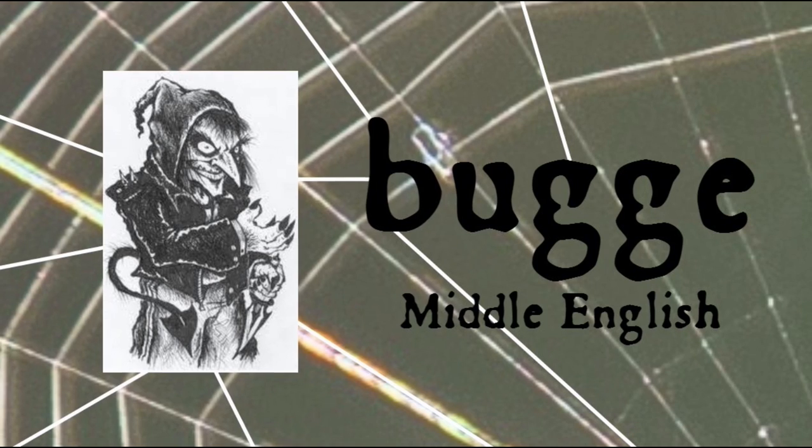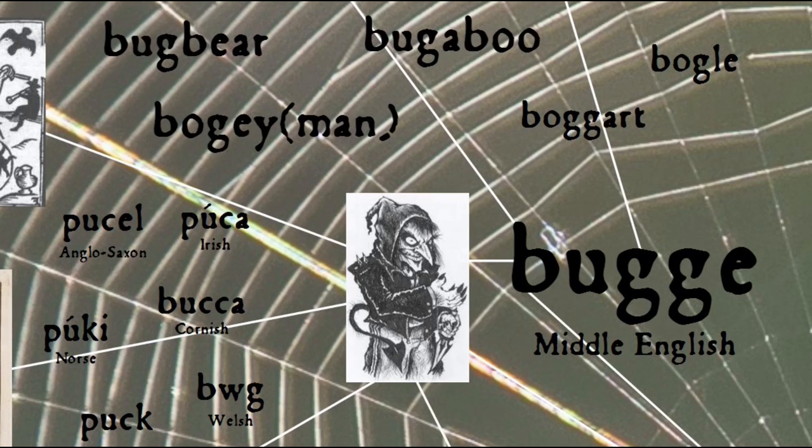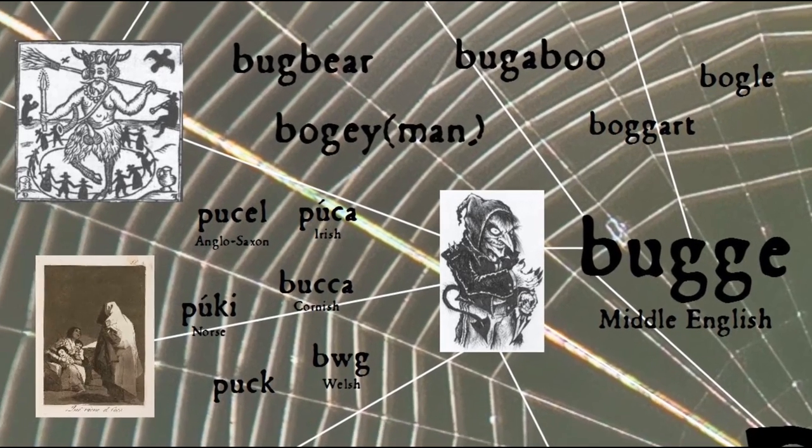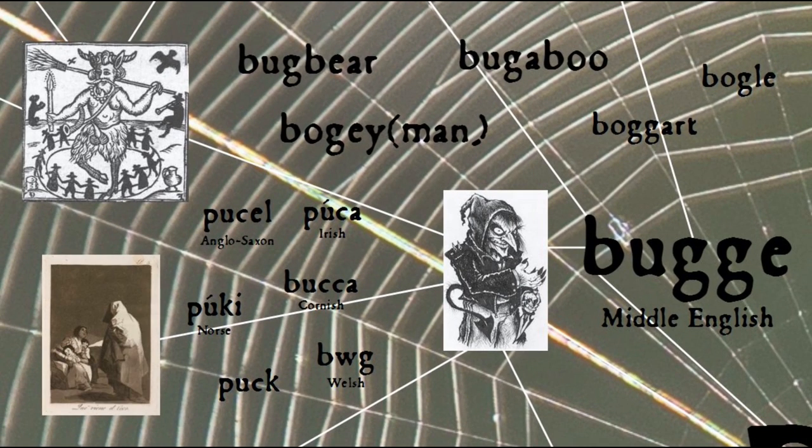This sense is still preserved in the related terms bugbear, bugaboo, bogey, and boogeyman, as well as a number of other similarly named creatures. All of these similar words refer to mischievous folkloric beings or spirits or ghosts, particularly in Britain or other northern European areas, and may stem from a similar folk belief in the Middle Ages. The earliest attestation of the word in Middle English actually refers to a scarecrow.